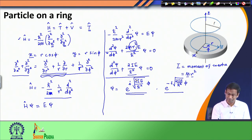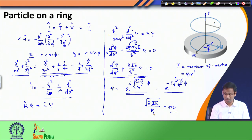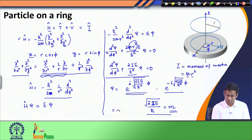So there are two possible solutions: e to the power plus or minus i times this term multiplied by phi, where phi is the angular coordinate of the system. Since this term is large, I will give it a shorter name and call it m. This m depends on the moment of inertia, the mass of the particle, the radius of the ring, ℏ, and the energy of the system. So the wave function I obtain is e to the power imφ — this is the general form of the wave function.